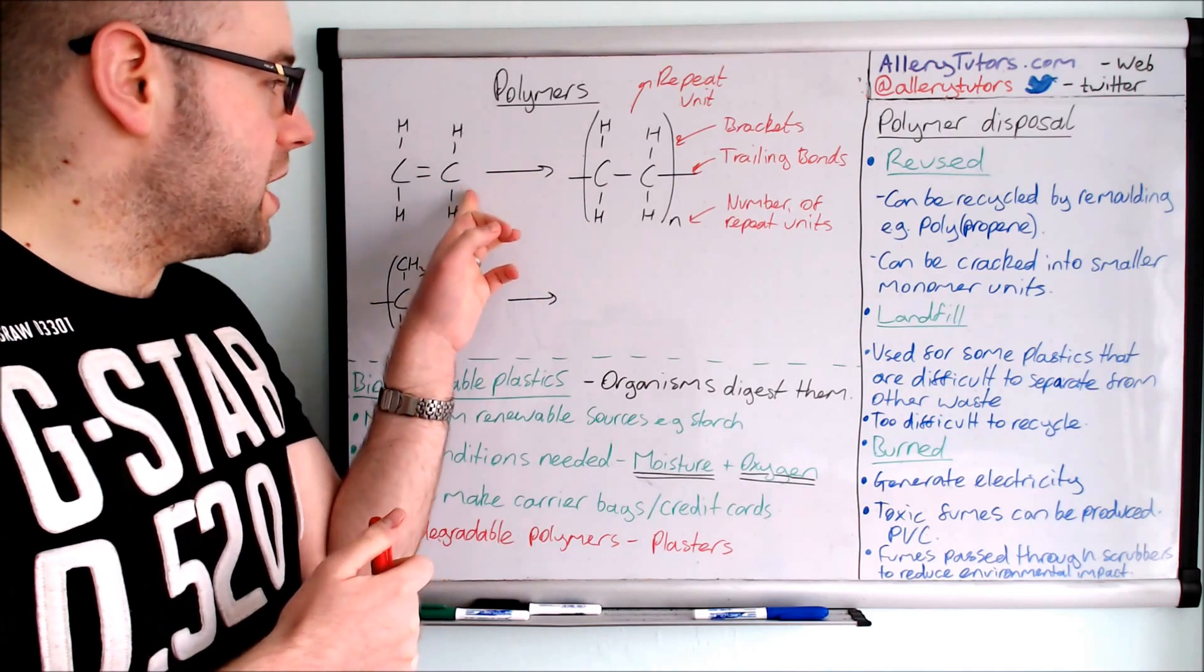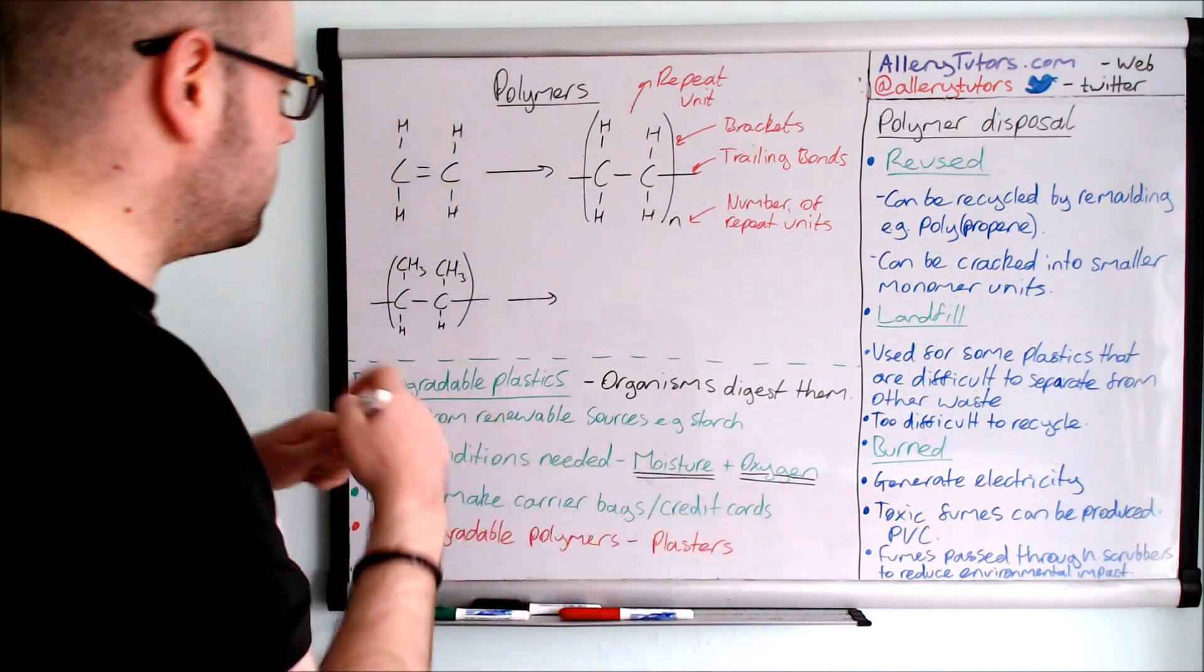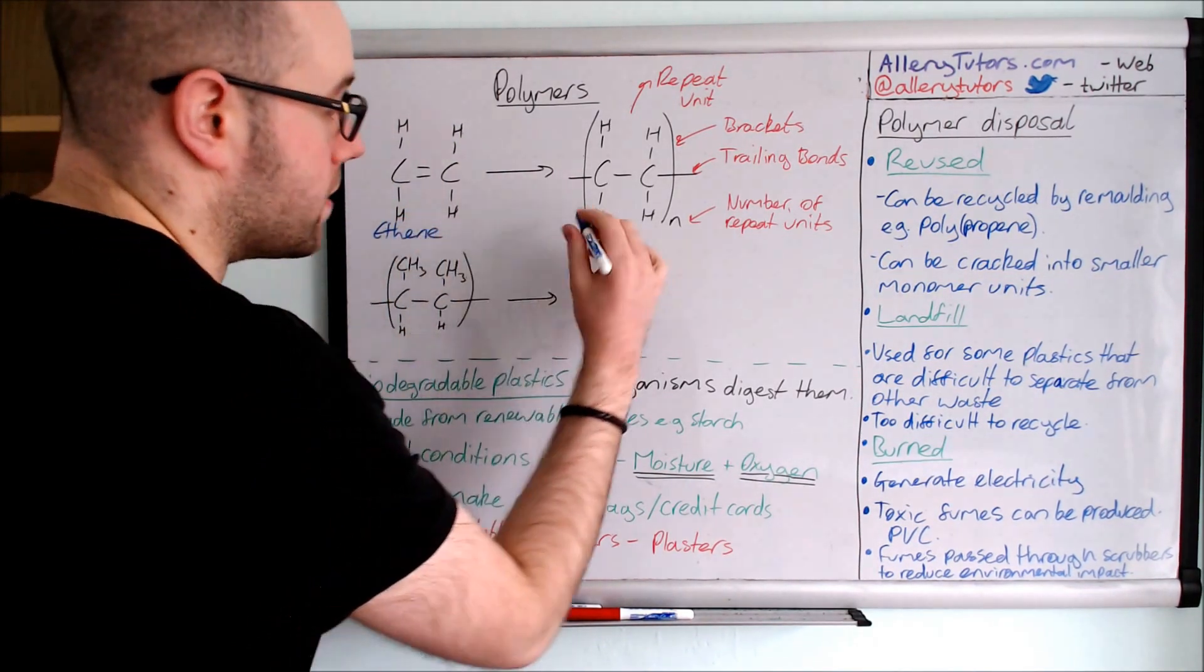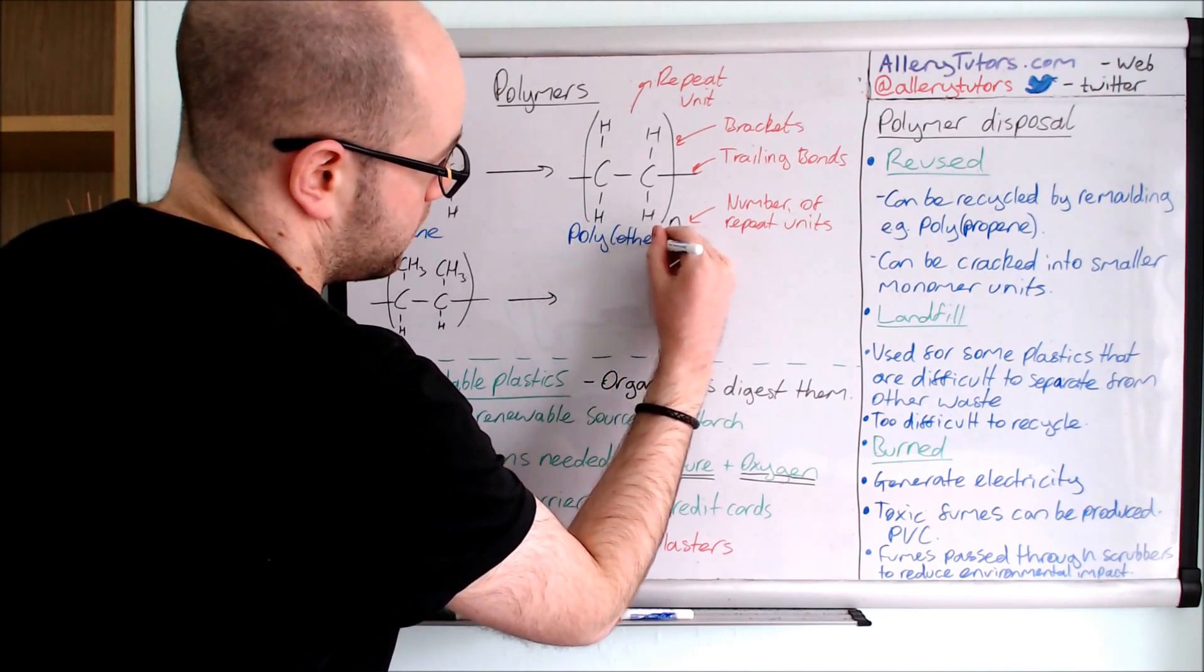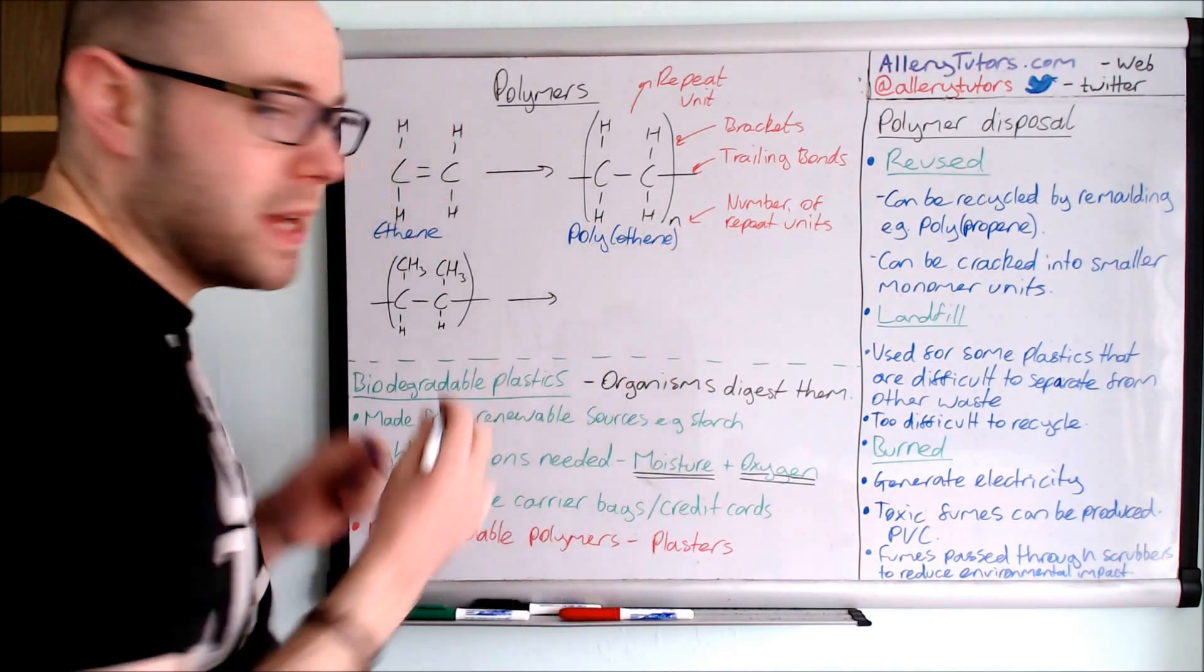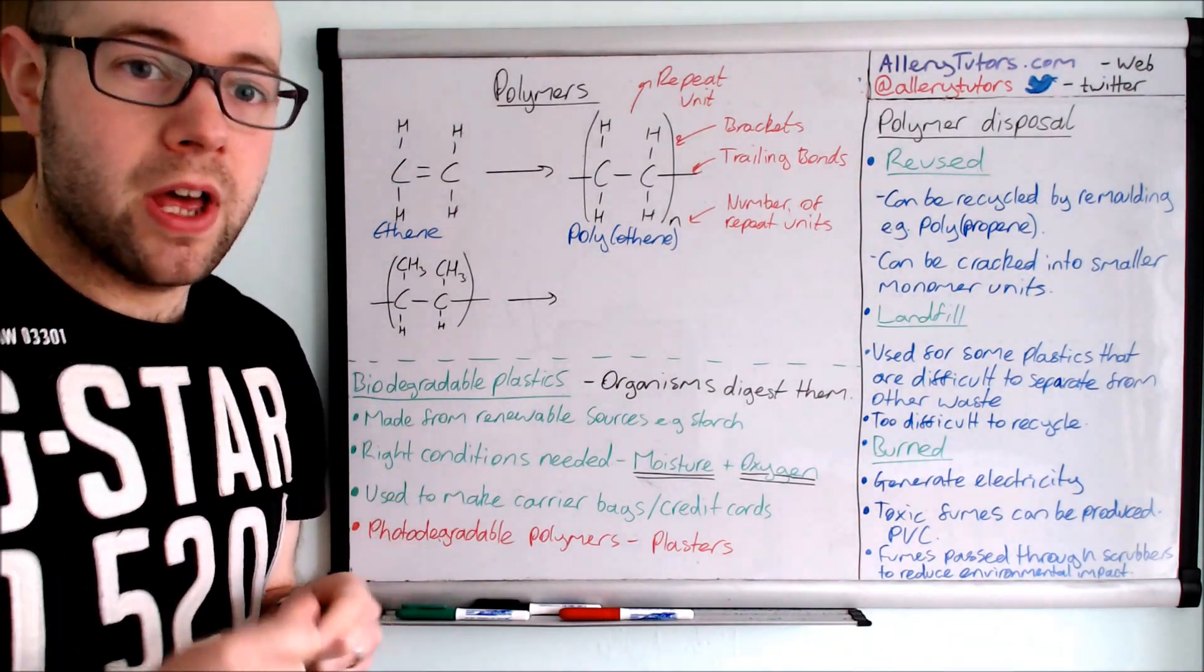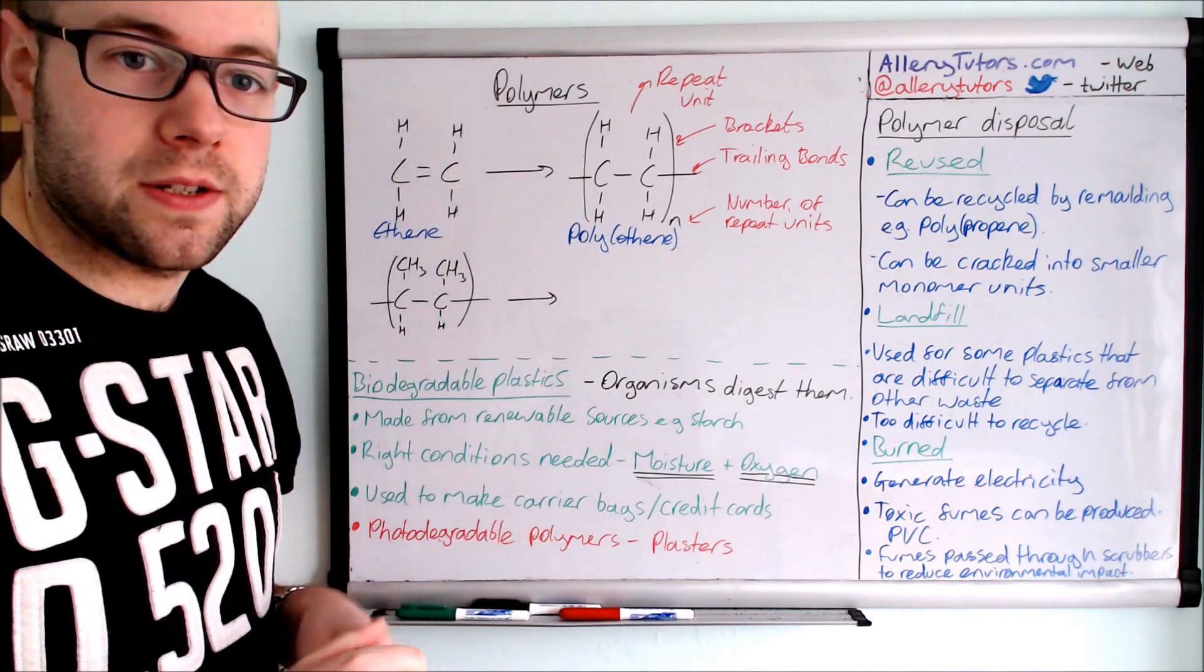This one in this case is called ethene. And in terms of nomenclature, let's put this in blue. We'll call this ethene. This one is called poly, and then in brackets we put ethene. So we still keep the 'e' bit, but it's very important to put the word poly in front of it. And that just tells us we have lots of ethene molecules that were ethene molecules joining together to form this polymer.